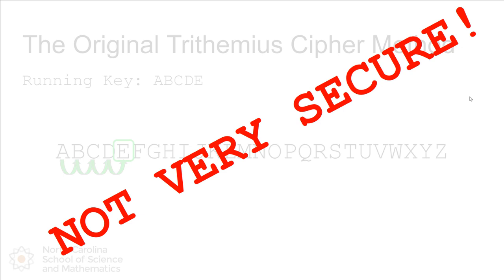So if you know it was a Trithemius cipher, you know the key, you know the method — it's very insecure. Now it turns out there are some ways that we can improve upon this. We just need some flexibility. Johannes was not very flexible, so we're going to introduce some flexibility into the system.